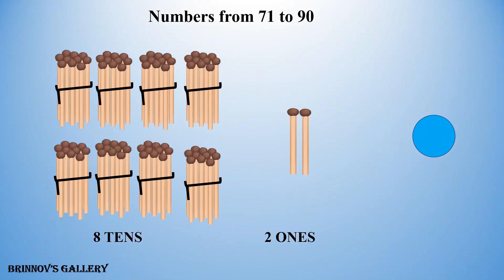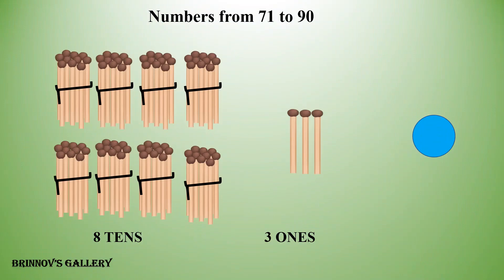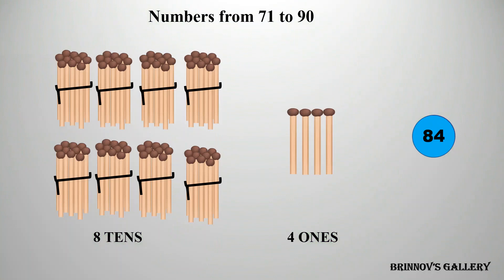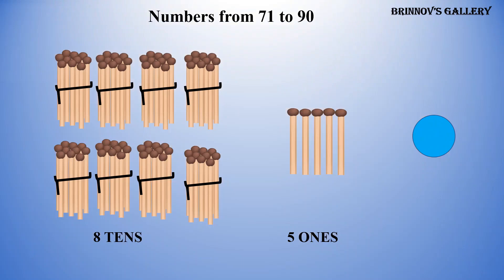8 tens, 2 ones — 82. 8 tens, 3 ones — 83. 8 tens, 4 ones — 84. 8 tens, 5 ones — 85.